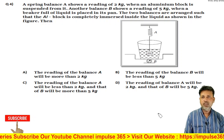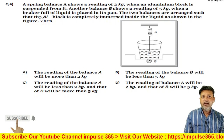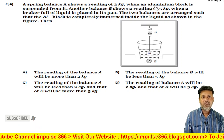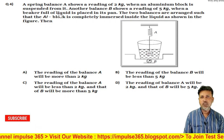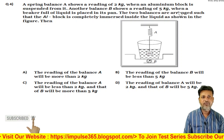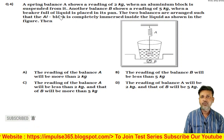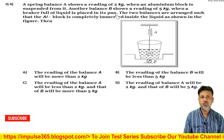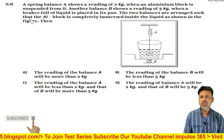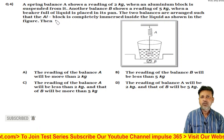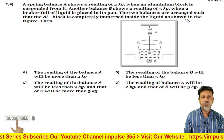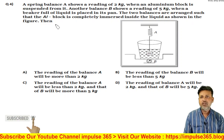Chalo, next question karte hai. A spring balance A shows a reading of 2 kg when an aluminium block is suspended from it. Another balance B shows a reading of 5 kg when a beaker full of liquid is placed in its pan. The two balances are arranged such that the block is completely immersed inside the liquid as shown in the figure.